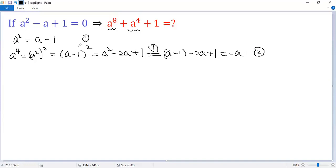From there, we can calculate A to the power of 8. Square both sides again. So A to the power of 4 and then square equals negative A squared.